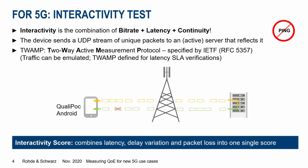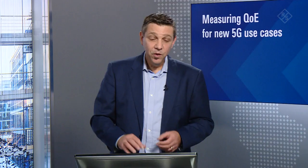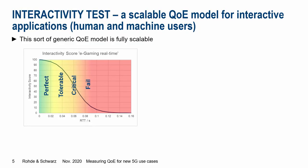The outcome is a single score that combines latency, delay variation, and packet loss into one result. The beauty of this test case is that we can simulate and emulate different use case patterns. In this example on this graph, we have created a model for e-gaming. You can see the curve showing how good a network has to be in terms of bitrate, latency, and continuity — so that we can say whether the service is perfect, tolerable, critical, or not good enough for e-gaming.